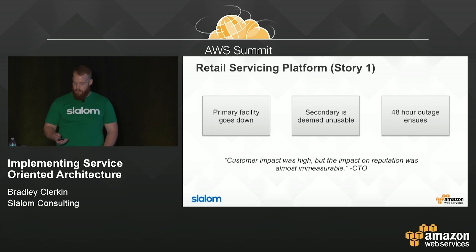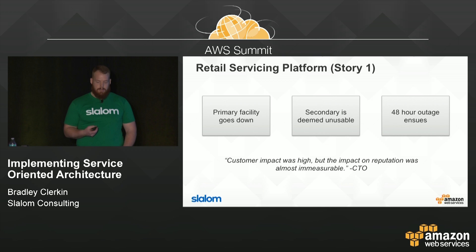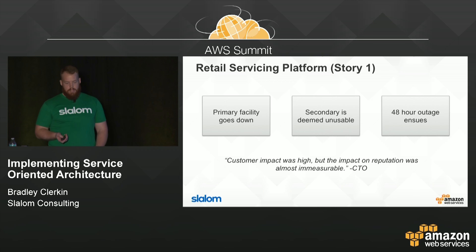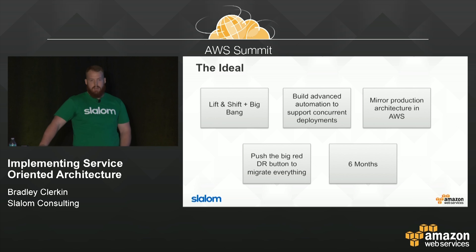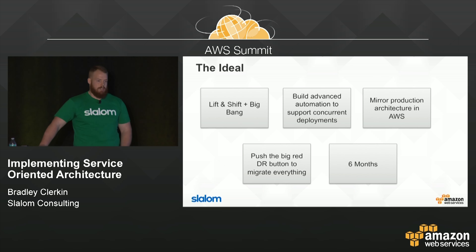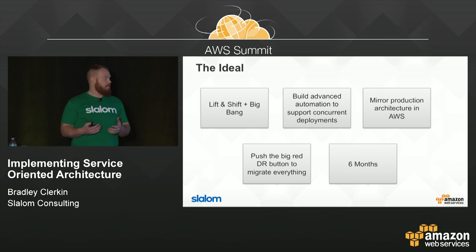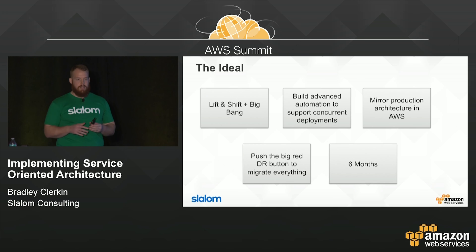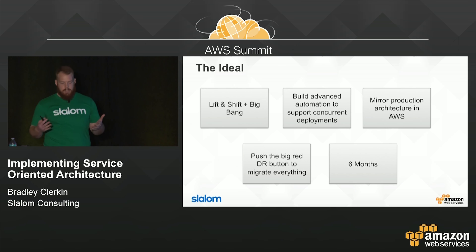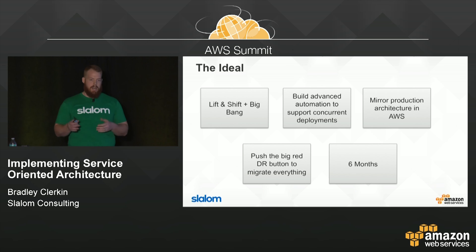The CTO summed it up best: customer impact was high, but the impact on reputation was almost immeasurable. This was their big motivating factor for going to AWS. They wanted to get out of the colo business, and AWS was a clear winner. Their ideal scenario was doing a big lift and shift — mirroring their production architecture in AWS exactly as it was on-premise, enabling a true active-active hybrid scenario with advanced automation to do concurrent deployments to both on-premise and the cloud.